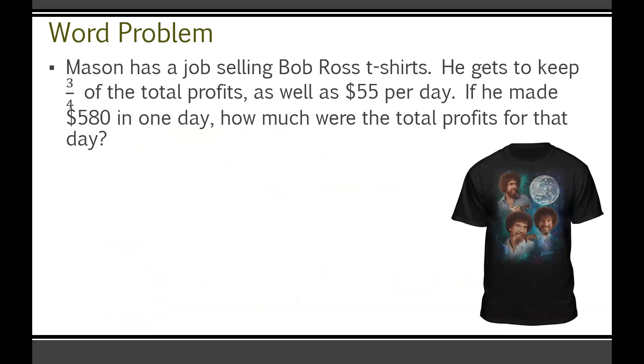All right, I think this is the last problem we have here today. Again, if you want, you can pause this one and try it on your own, but other than that, I'm going to go over it now. So Mason has a job selling Bob Ross t-shirts. He gets to keep three quarters of the total profits as well as $55 per day. So in other words, even if he sold no t-shirts, he would still come away with $55 per day of work, right? So if he made $580 in one day, one, I'd be very jealous and be saying, you know what, that's a lucrative business selling Bob Ross t-shirts. But two, if you made $580 in one day, how much were the total profits for that day?